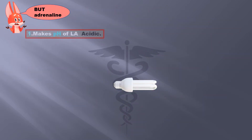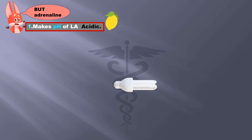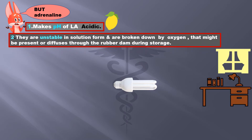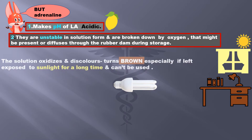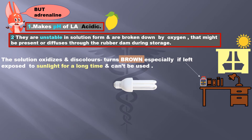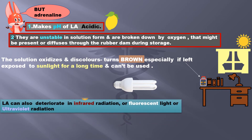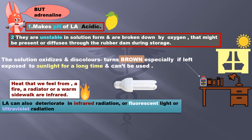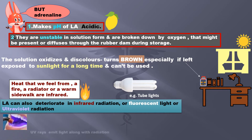However, adrenaline has drawbacks: 1. It makes the pH of LA acidic. 2. It tends to be unstable in solution form and is broken down by oxygen that might be present or diffused through the rubber stopper during storage — the solution oxidizes and discolors, turning brown especially if left exposed to sunlight for a long time and can't be used then. LA can also deteriorate in infrared radiation, fluorescent light, or ultraviolet radiation. Heat from a fire, radiator, or warm sidewalk are examples of infrared radiation; tube lights are fluorescent, and light-cure units used in the clinic emit UV light.